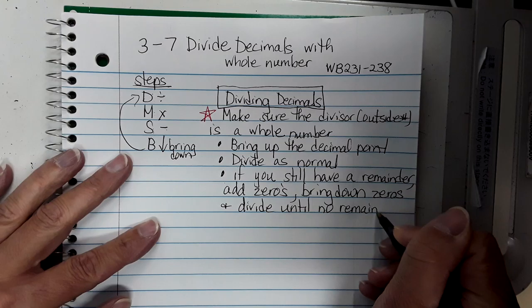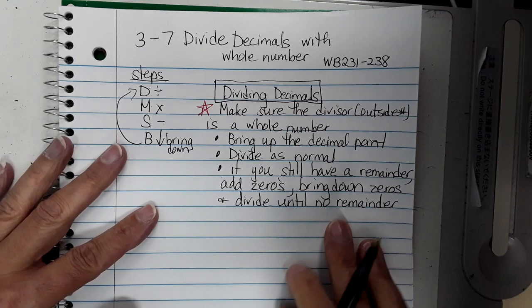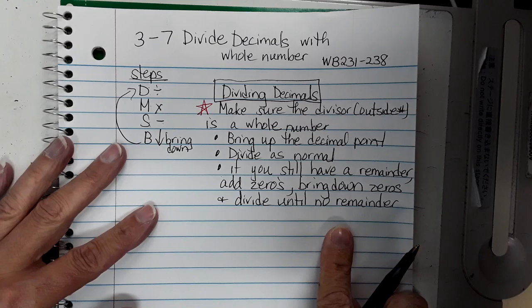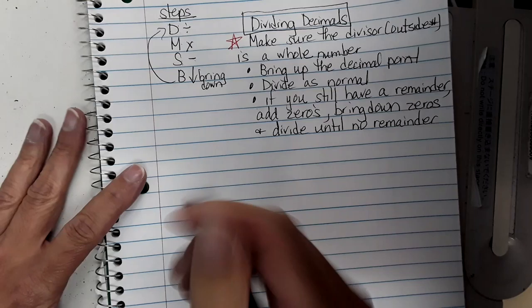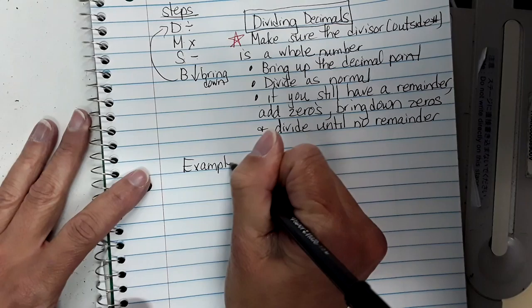Keep in mind that when you are dividing, sometimes they'll say round to the nearest thousandth or round to the nearest tenth. If they say round to the nearest tenth, you have to go to the hundredths place — you have to go one extra place beyond what they told you to round to, because then you can follow your rounding rules. So let's do some examples.